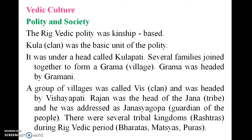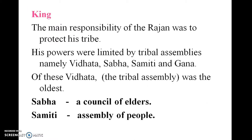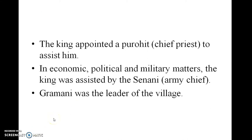There were several tribal kingdoms called Rashtra during the Rigvedic period. The main responsibility of the Rajan was to protect his tribe. His powers were limited by tribal assemblies namely Vidatha, Sabha, and Samiti. The Sabha was the council of elders, and Samiti was the assembly of the people. The king appointed a Purohit — the chief priest — to assist him in economic, political, and military matters. He was also assisted by the Senani, the army chief.